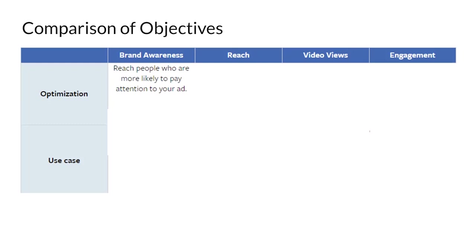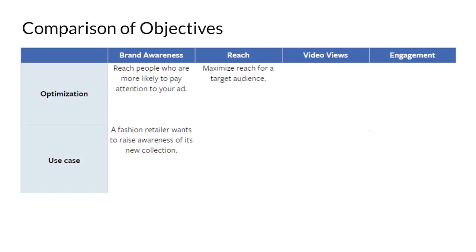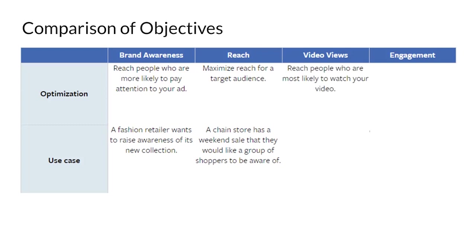When it comes to the brand awareness objective, you are optimizing your campaigns to reach people who are more likely to pay attention to your ad. A simple use case might be a fashion retailer who wants to raise awareness for a new collection. When it comes to reach, you want to maximize reach for a target audience — they may already know about your product, but you want to maximize the number of people reached. A use case would be a retail chain with a weekend sale wanting to reach shoppers.